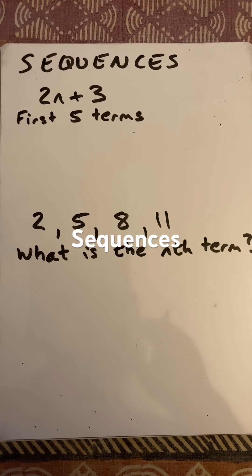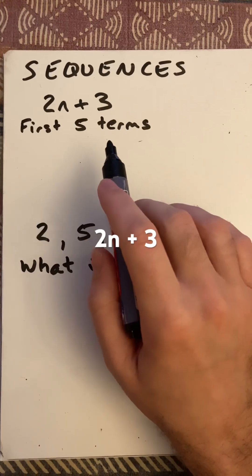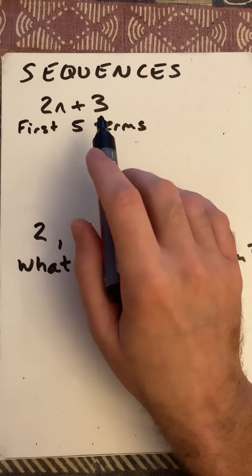Hello and welcome to Marked Maths, doing a short on sequences. So in this first one, we're going to find the first five terms of the sequence 2n plus 3.